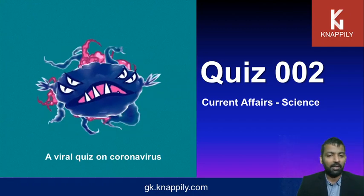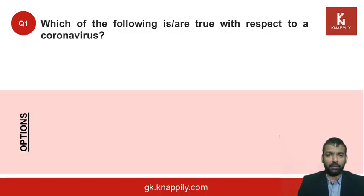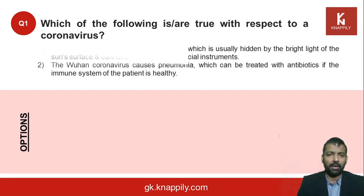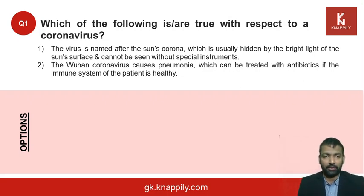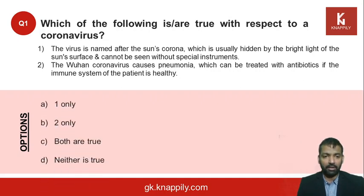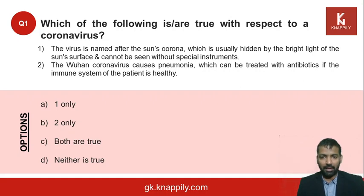Question number one: which of these is or are true with respect to a coronavirus? Statement one — this virus is called coronavirus after the Sun's corona, which is usually hidden by the bright light of the Sun's surface and cannot be seen without special instruments. Statement two — the Wuhan coronavirus causes pneumonia which can be treated with antibiotics if the immune system of the patient is healthy.